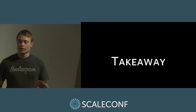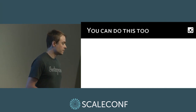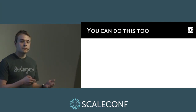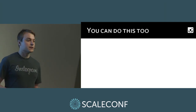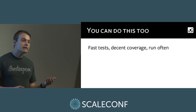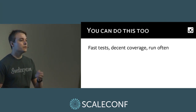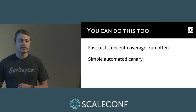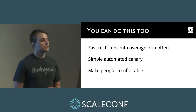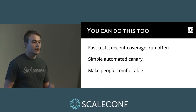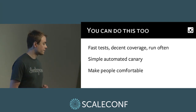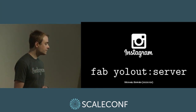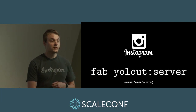What should you take away? The main thing is that you can do this too. Continuous deployment systems don't need to be complex and aren't only within reach of big companies like Instagram. Start with something simple, evolve your current mechanisms, and stick to these principles: a fast test suite with decent but not necessarily perfect coverage, run often during code review, before landing, and after landing; a simple automated canary to test changes in production before deploying to the entire fleet; make people comfortable with simple understandable behavior, good visibility, and stop mechanisms; and have good detection and fast rollback with good monitoring and alarming.